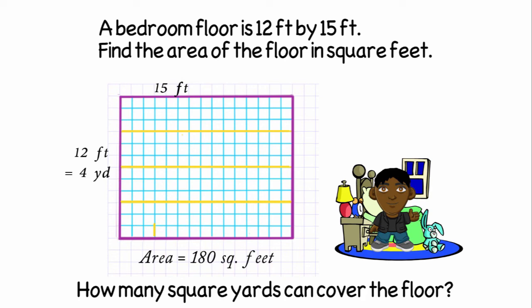And if I take my 15 feet, which is the width of my room, and divide that into groups of three, I'll get five yards because five times three is 15.